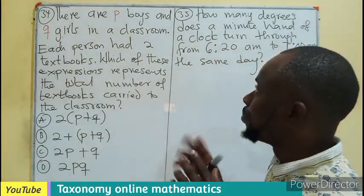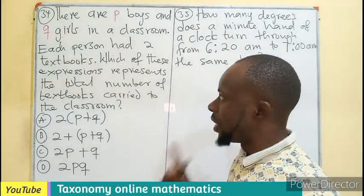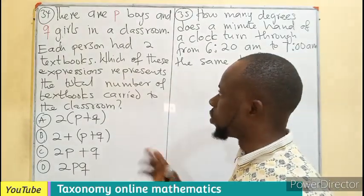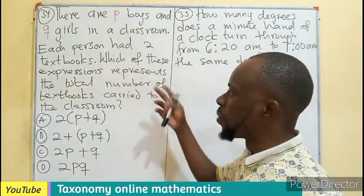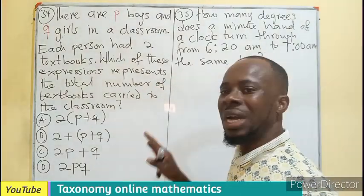The objective test question is under numeracy. There are P boys and Q girls in a classroom. Each person had two textbooks. Which of these expressions represents the total number of textbooks carried to the classroom?